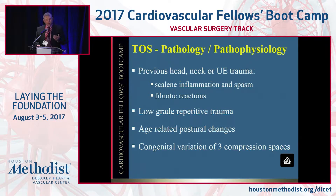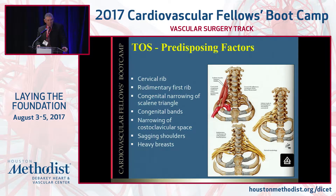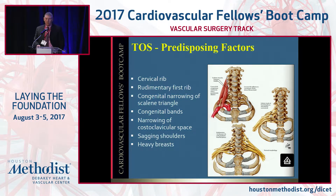What's the pathology and pathophysiology? Well, you can get previous head trauma, low repetitive trauma, low repetitive movements, age-related postural changes, and congenital variations of the three compression spaces, which is significant and synonymous with TOS. Some of the predisposing factors: cervical rib, a rudimentary first rib, elongated transverse process, congenital bands, narrowing of the costal-clavicular space, sagging shoulders, or heavy breasts. All those people have come to my clinic with these problems over the last 25 years.